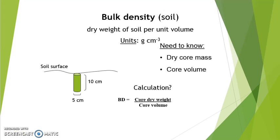Soil bulk density is the dry weight of soil per unit volume. Bulk density is an important physical soil characteristic affecting root growth and soil permeability. Bulk density is calculated by dividing the soil dry weight by the soil core volume. Just like volumetric water content, we need to know the volume of soil sampled to calculate bulk density.